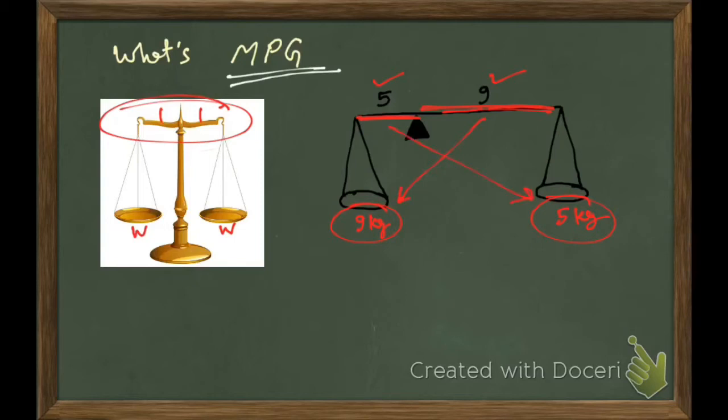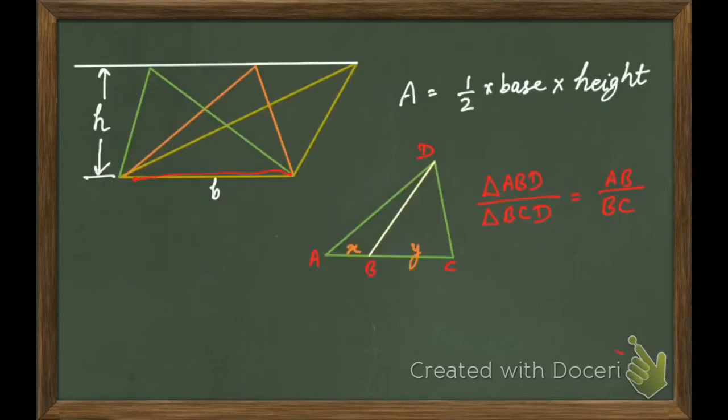And one more important thing is: what would be the mass you feel here? Assuming the negligible mass of arms, we would feel 5 plus 9 equals 14 kg. We can say this 14 is the sum of these two arms or sum of these two masses. And this concept is very simple: area is equal to half into base into height.